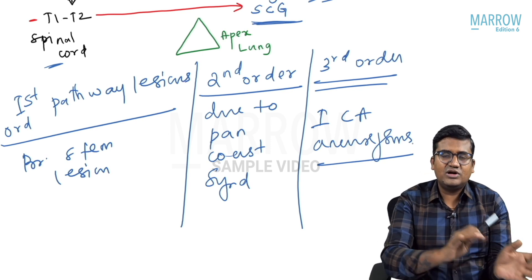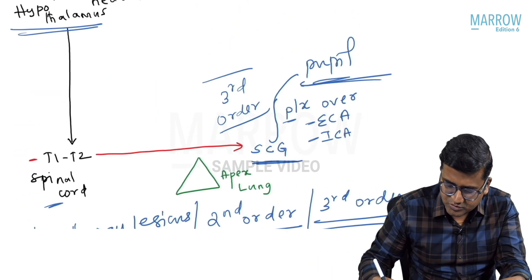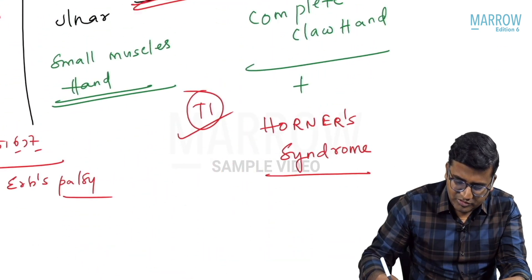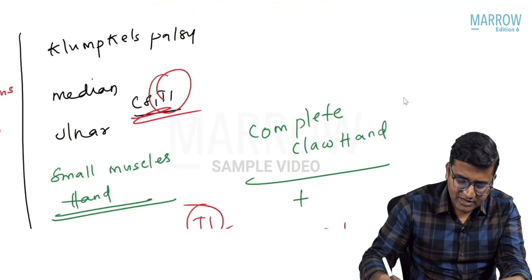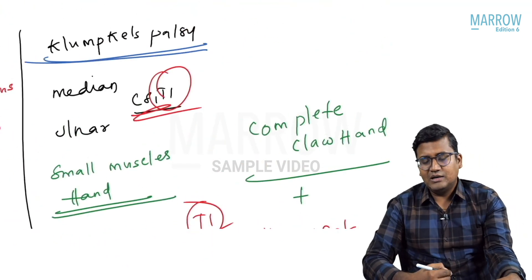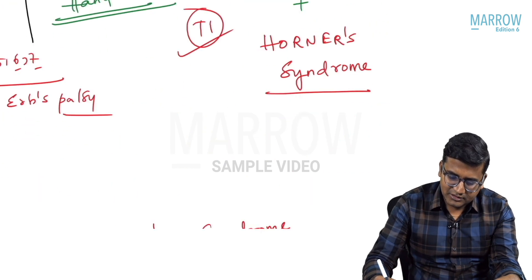Just remember the first, second, and third order neurons — that is sufficient. Horner syndrome is seen in Klumpke's palsy, where you will see complete claw hand and Horner syndrome. In this module we discussed the formation of the brachial plexus, its branches, applied injuries including upper trunk injury (Erb's palsy) and lower trunk injury (Klumpke's palsy), and finally Horner syndrome in detail.